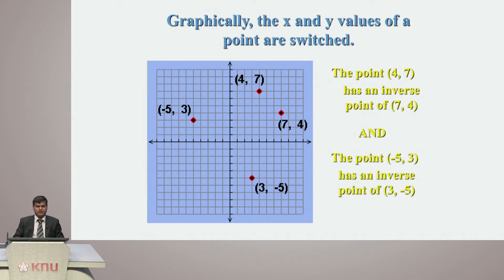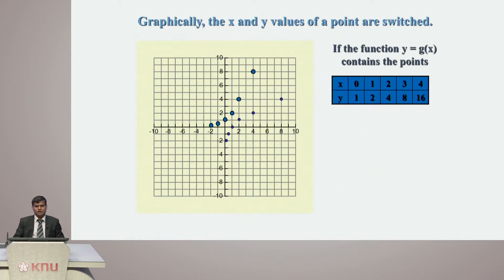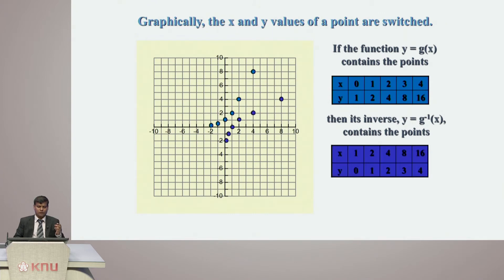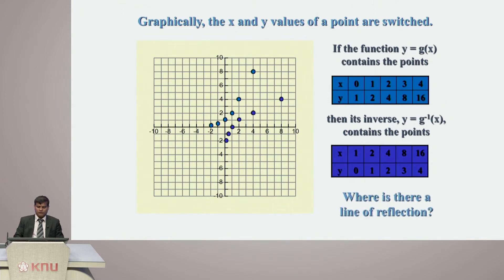If you want to represent things graphically, the x and y values of the points are switched. For example, the point (4, 7) and its inverse (7, 4); and (−5, 3), its inverse would be (3, −5) — just the reflection of these points. If a function y = g(x) contains x values 0 to 4 and y values 1, 2, 4, 8, 16, then the inverse function has x values 1, 2, 4, 8, 16 and y values 0 to 4. There is a line of reflection that clearly marks the function and its inverse.